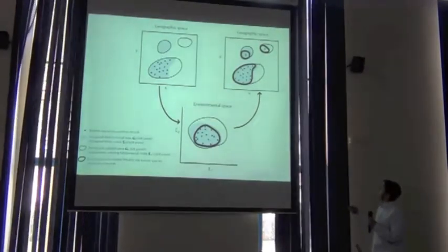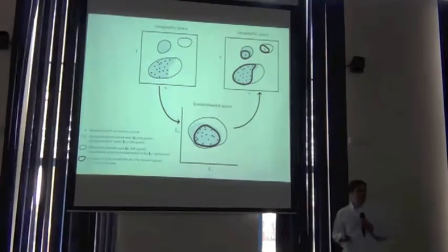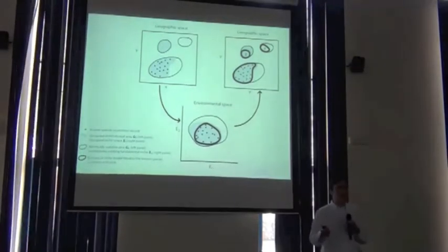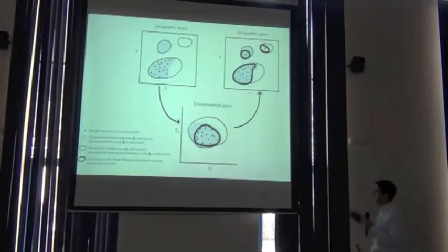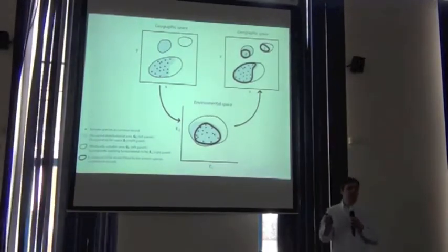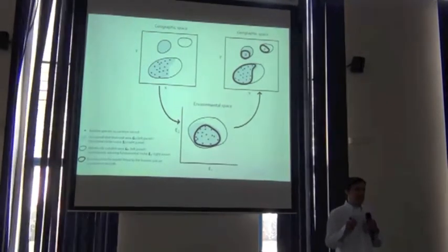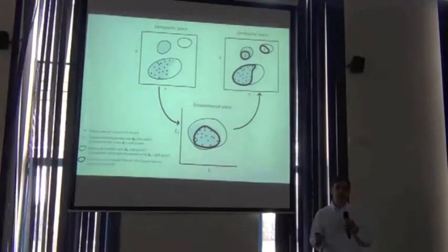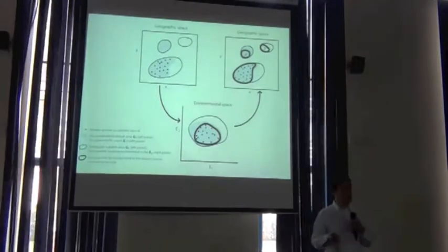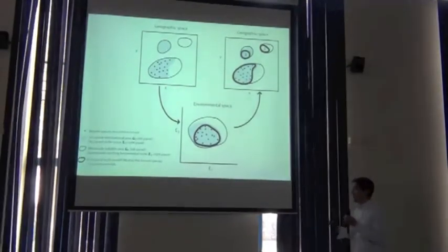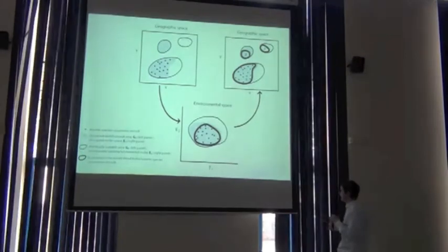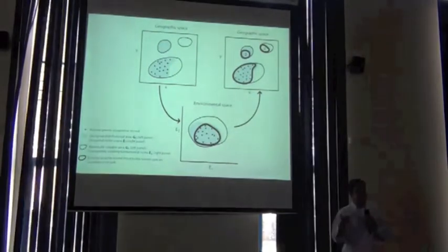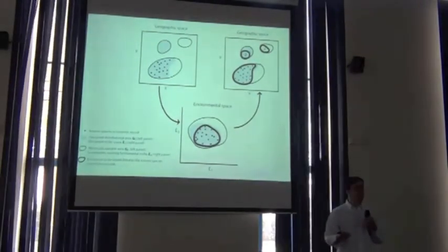Are we predicting the niche or are we predicting the distribution? Essentially, all we're doing is characterizing those areas in the landscape that have environmental conditions similar to where we've already observed the species. Sometimes that's going to approximate the distribution, sometimes it's going to approximate the fundamental niche, but essentially that's all the models are telling us. We characterize the ecological niche and project that back into environmental space — it just tells us these are areas in the landscape similar to where we've already observed the species.